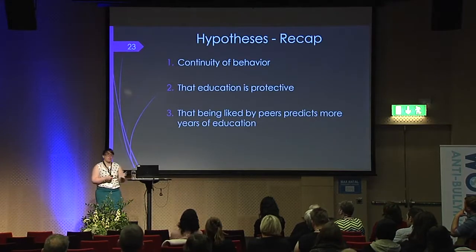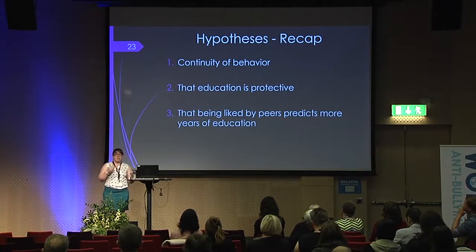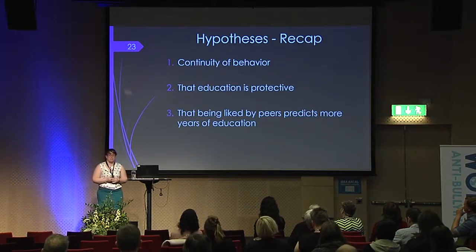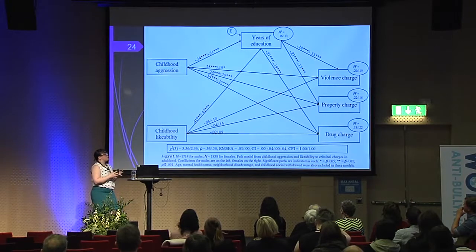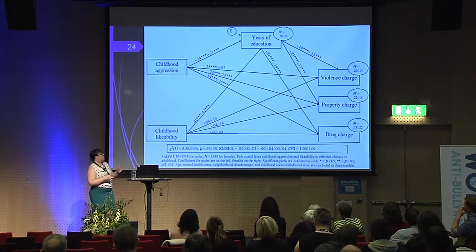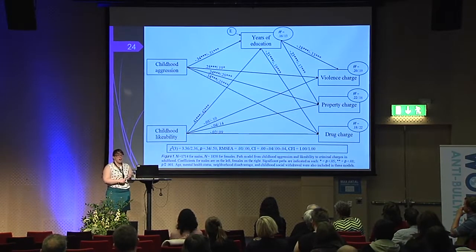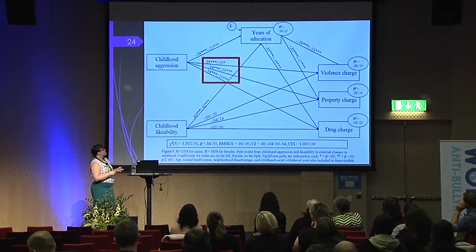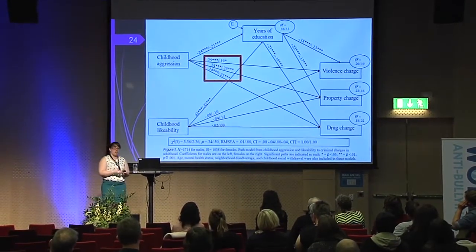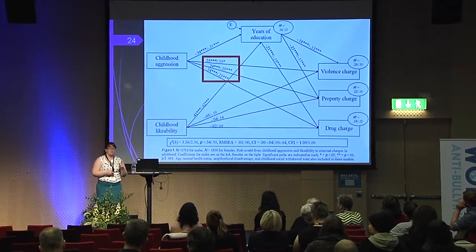To recap my hypotheses: continuity of behavior, education is protective, and being liked by peers predicts more years of education. Here are my results. On the left in black are males, on the right in reddish color are females. Both models were excellent fit — you can see the fit indices at the bottom. The model also controlled for age, childhood withdrawal, neighborhood disadvantage, and mental health status. For my first hypothesis, we see this continuity of behavior: childhood aggression predicts an increased probability of violence, property, and drug charges for both males and females.